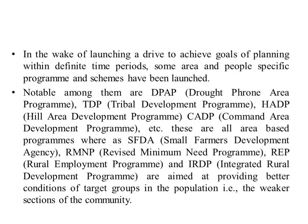In the wake of launching a drive to achieve goals of planning within different time periods, some area and people-specific programs and schemes have been launched. Notable among them are: Drought Prone Area Programme (DPAP), Tribal Development Programme (TDP), Hill Area Development Programme (HADP), and Command Area Development Programme (CADP). These are area-based programs. Additionally, Small Farmers Development Agency (SFDA), Revised Minimum Need Program (RMNP), Rural Employment Program (REP) and Integrated Rural Development Program (IRDP) are aimed at amelioration of conditions of target groups, i.e., the weaker sections of the community.